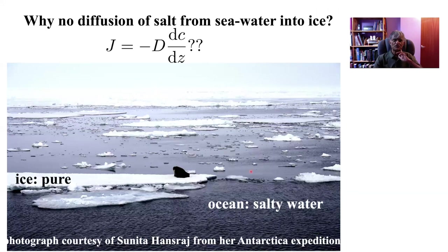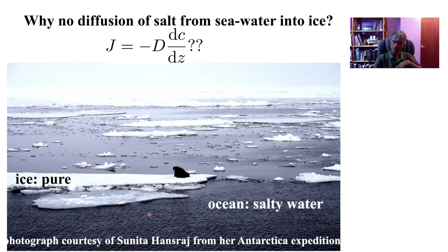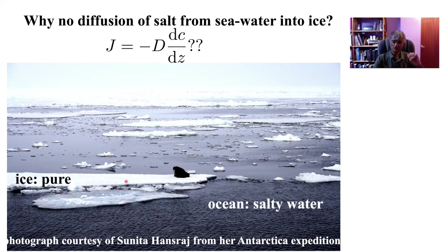We can demonstrate very easily that Fick's law doesn't represent the true picture of diffusion in general. Imagine a piece of ice — pure water — in contact with the salty water of the ocean. They have been in contact for a very long time, and yet the salt doesn't diffuse into the ice. That clearly doesn't satisfy Fick's law because we've got a concentration gradient of salt between the salty water and the ice and yet the ice remains pure. In order to understand that we need to express the force driving diffusion in terms of a free energy gradient rather than a concentration gradient.